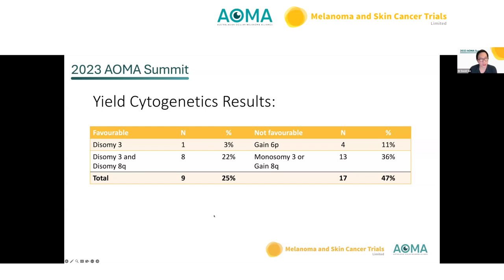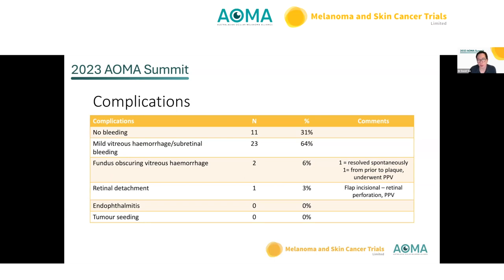Among cytogenetic results with a yield, 25% had favourable cytogenetics of disomy 3 and disomy 8q, and 47% had either gain in 6p, monosomy 3, or gain in 8q. In terms of complications, generally a low-grade profile: 31% had no bleeding, 64% had only mild vitreous haemorrhage or subretinal bleeding. Two cases — 6% — had fundus-obscuring vitreous haemorrhage, but only one was due to a biopsy and did not require surgery. One case had prior bleeding, and one case of retinal detachment from a flat incisional biopsy complicated by retinal perforation required vitrectomy. No cases of endophthalmitis or tumour seeding.